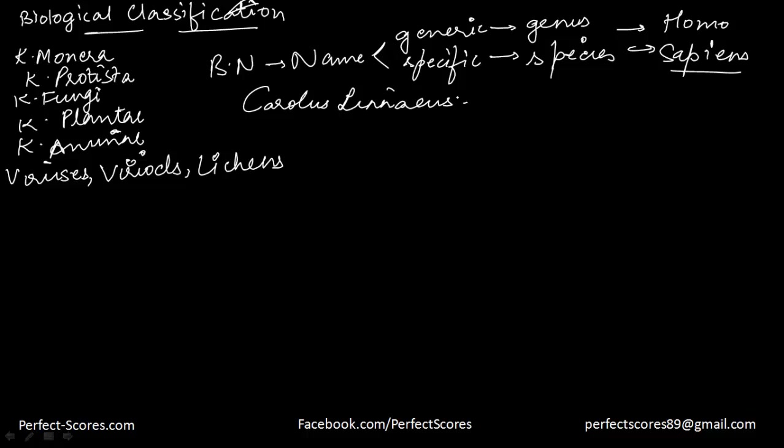In Linnaeus's time, only two kingdoms were recognized — the plants and the animals. Until quite recently it was developed, but now we have started to go according to the five kingdom classification. We'll do a brief idea of how basically those kingdoms are classified and what the basic criteria are.